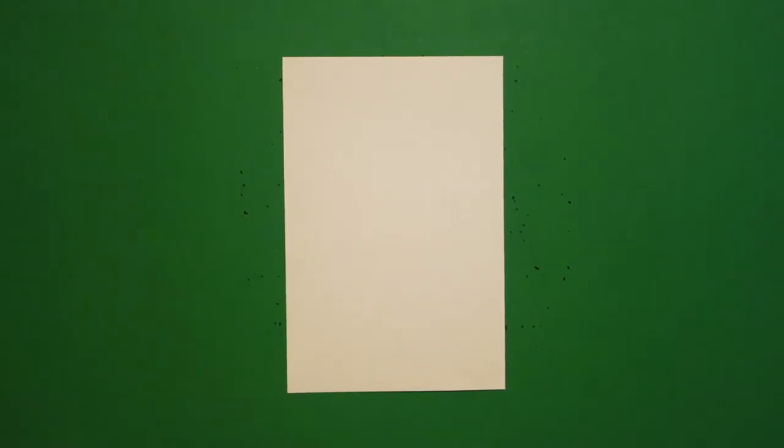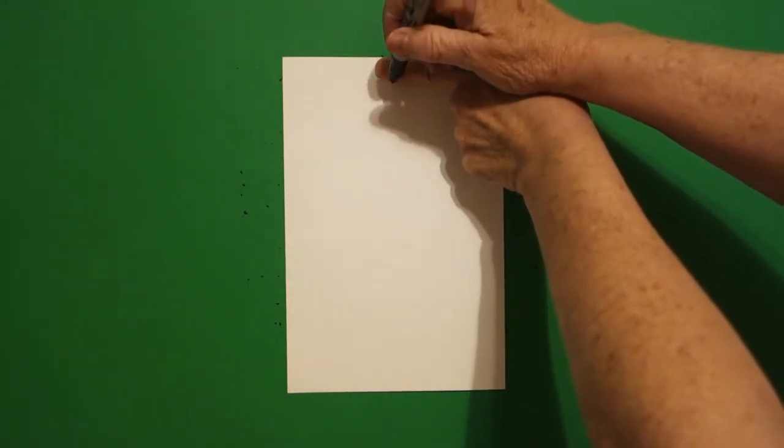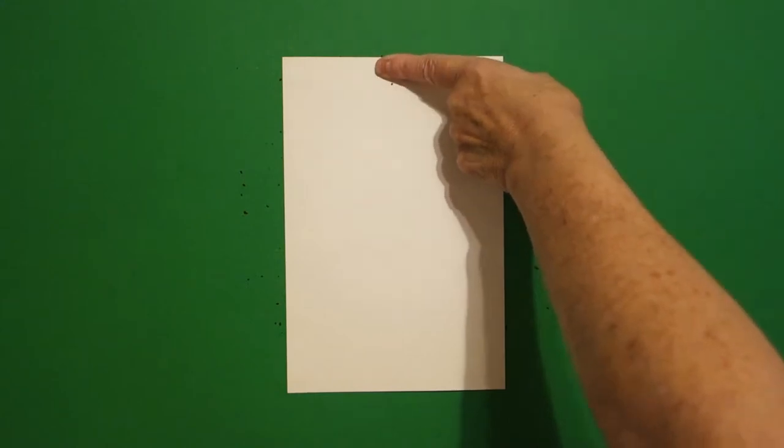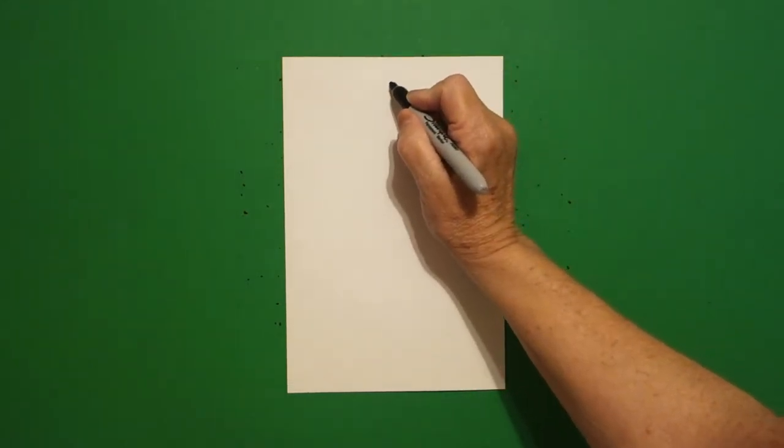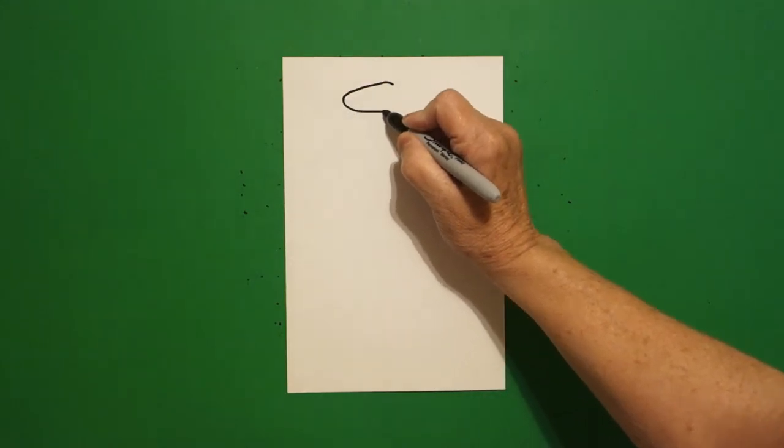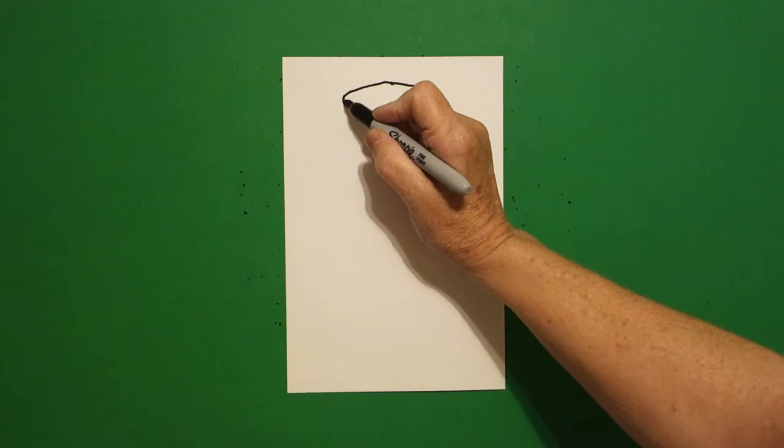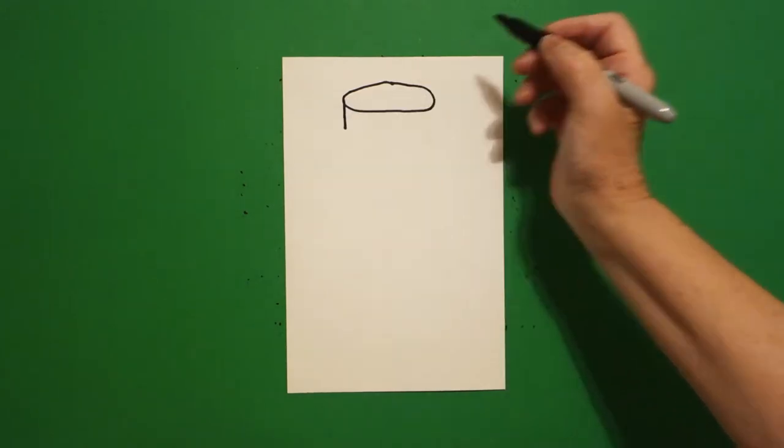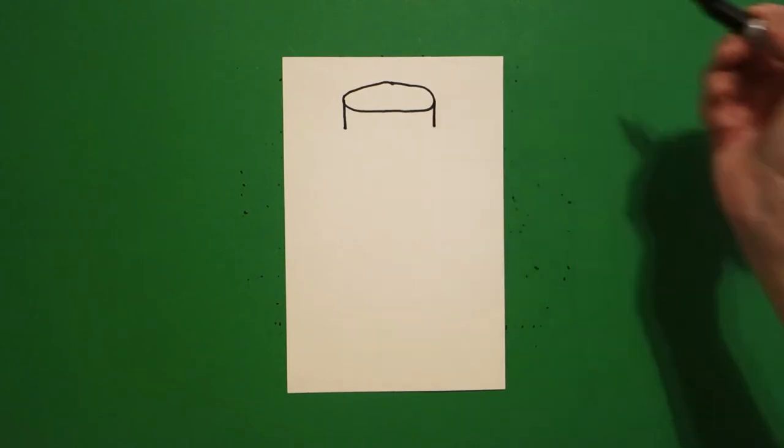Today's project is how to draw something you would never find in a jar, a sunset. Put one finger in the middle, underneath, put a dot, and from that dot we're going to draw a flat oval. Come on the left-hand side and draw a straight line down. Come on the right-hand side, draw another straight line down.